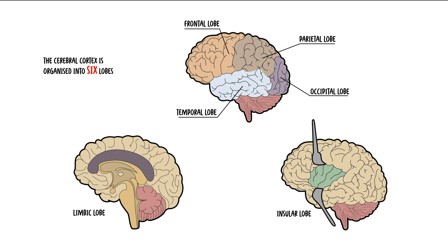In summary, in this video we talked about the cerebral cortex, the outer layer of grey matter that covers the two cerebral hemispheres. As well as discussing the anatomy, we talked about the lobes of the cerebral cortex: the frontal, the parietal, the temporal, the occipital, the insular, and the limbic lobes. We also discussed the function of each of these lobes and how injury to these lobes would present clinically.